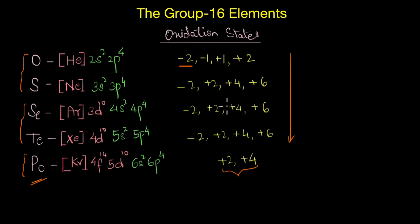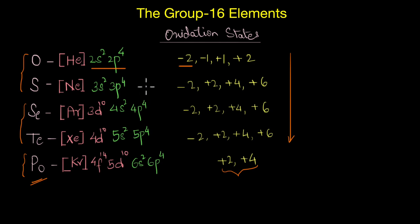Polonium shows only positive oxidation states, consistent with the tendency to lose electrons in heavier elements as we go down the group. Since these elements have six valence electrons in the outer shell, +6 is also their group oxidation state. Except for oxygen and polonium, all the other elements show a +6 oxidation state in some compounds.